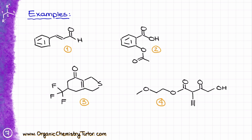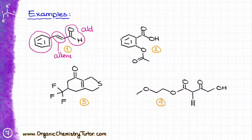Now that we've learned about the most common functional groups, let's look at a few examples. Pause this video, copy these molecules onto your paper, work through them, rewind if you need to refresh, and then continue to check your answers. For molecule number one: the first functional group is an aldehyde, then I have an alkene, and I also have an aromatic compound — an arene.